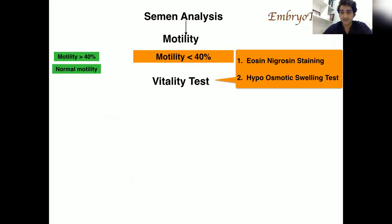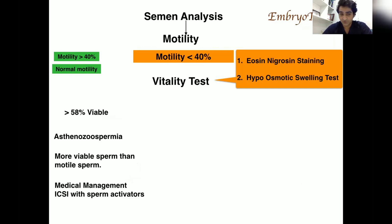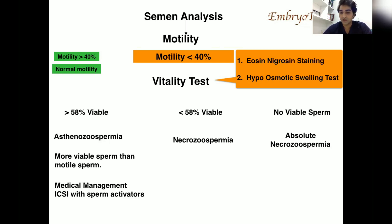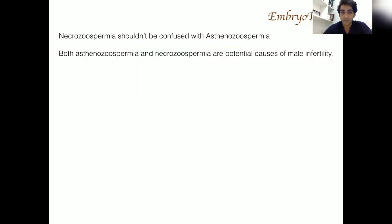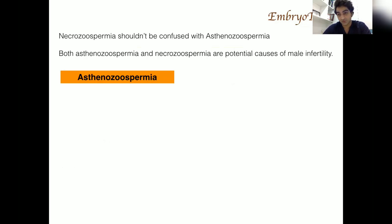After the vitality test, if the vitality is more than 58% then it is asthenozoospermia because there are more viable sperm, and we can go for medical management or simply activate the sperm and do ICSI. If the vitality is less than 58% then it is necrozoospermia. If there is no viable sperm at all then it is absolute necrozoospermia and we are dealing with dead sperm. Both asthenozoospermia and necrozoospermia are potential causes of male infertility and we should differentiate between them.